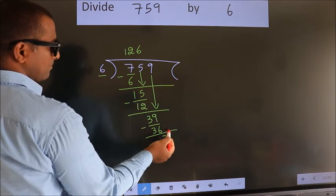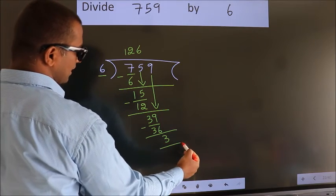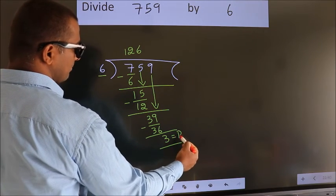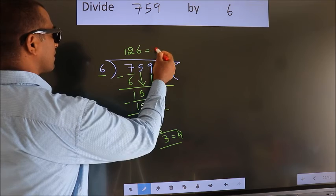No more numbers to bring it down. So we stop here. This is our remainder. This is our quotient.